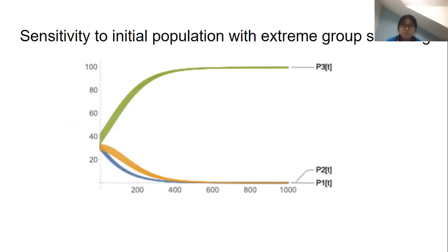Here are some results for our modeling. This first one is about sensitivity to initial population with extreme group switching. Here we make three parameters c1, c2, and c3 all having the same values. In this case, the initial population doesn't have a strong effect on the long-term behavior. Both groups of P1 and P2 will tend to move to P3 as we expect.